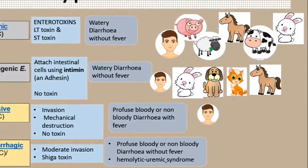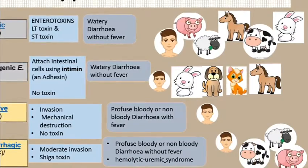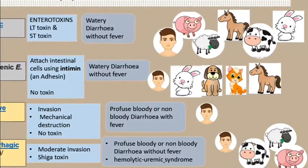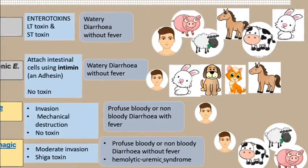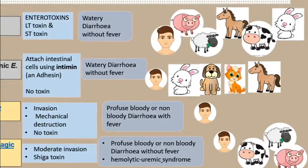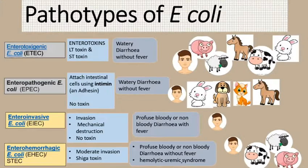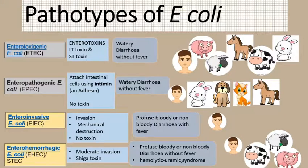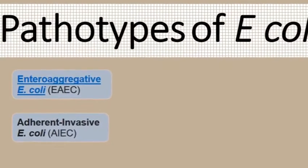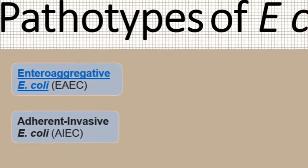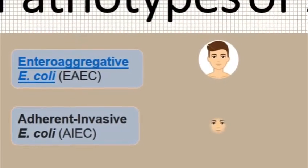Enterohemorrhagic E. coli affects humans, cattle, and pigs. In pigs, it presents as a disease known as edema disease. Other than these major four, there are also enteraggregative E. coli and adherent-invasive E. coli, which mainly affect human beings.